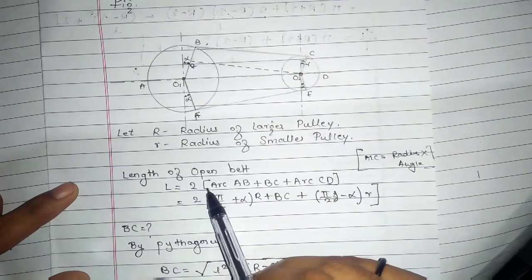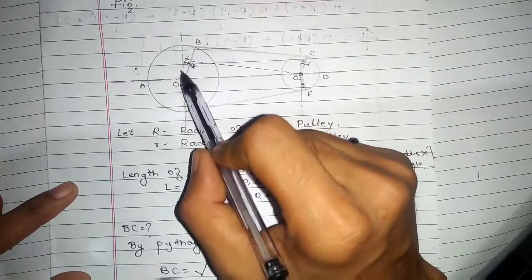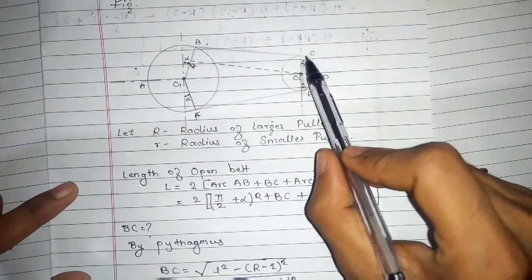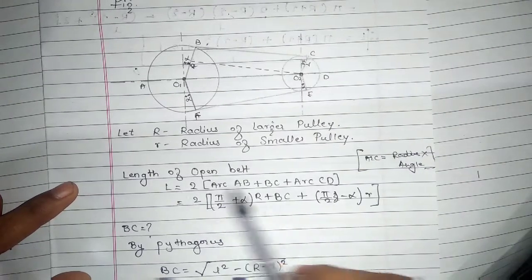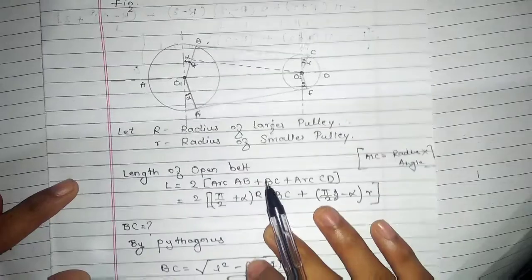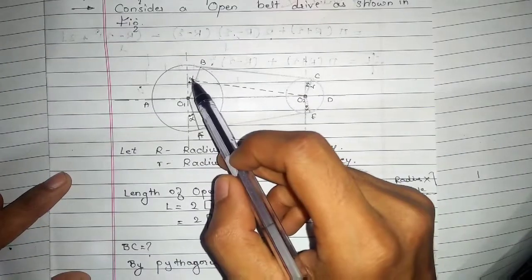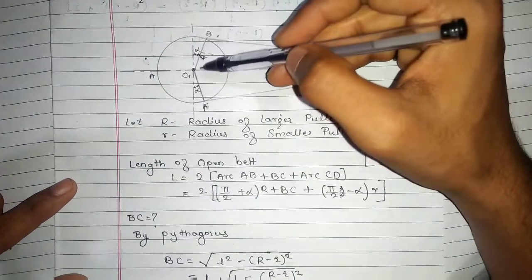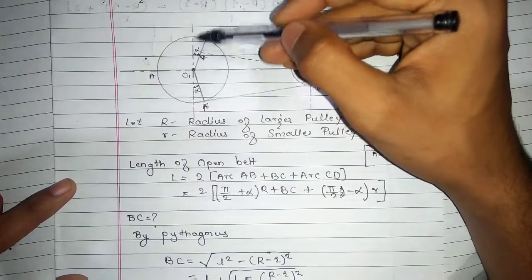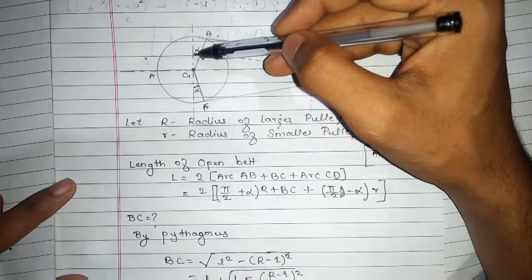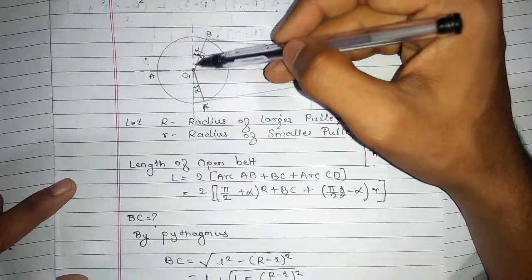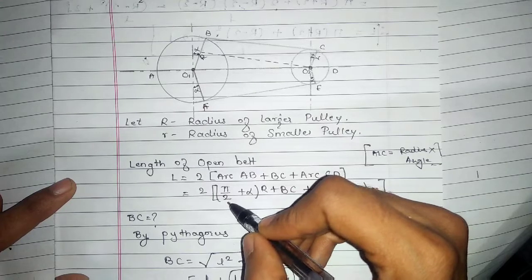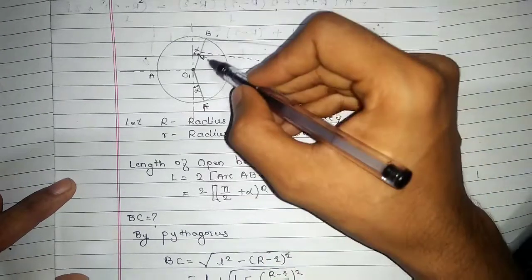So L equals 2 times arc AB plus BC plus arc CD. Now arc is nothing but radius multiplied by angle. For arc AB, the angle is 90 degrees, which is 90 plus alpha. We can write 90 degrees as pi by 2. So the term becomes 2 into (pi/2 plus alpha) into capital R.